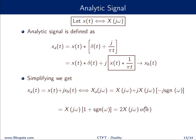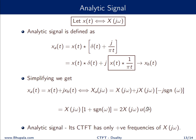By simplification, Xₐ(jω) equals 2·X(jω)·u(ω). Looking at this equation carefully, we see that the Fourier transform of the analytic signal retains only the positive frequencies of X(jω). This is a very important result, and we will discuss the concept of analytic signal and complex envelope in the next lecture.